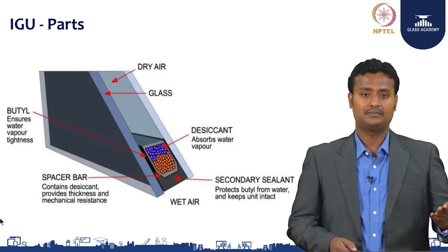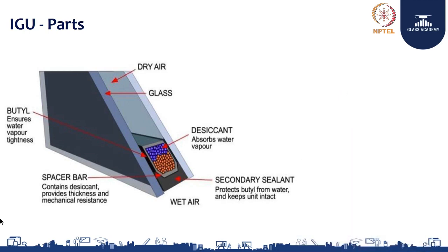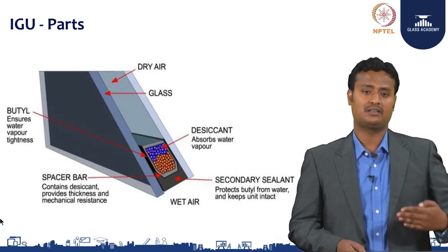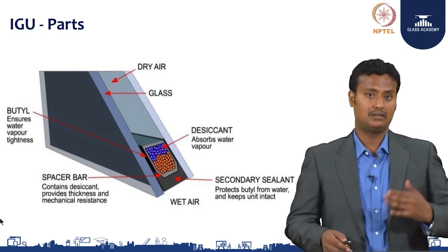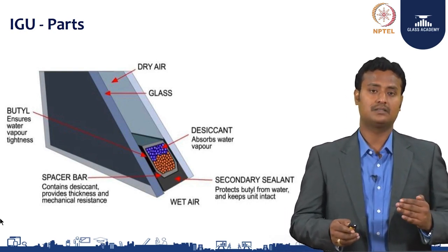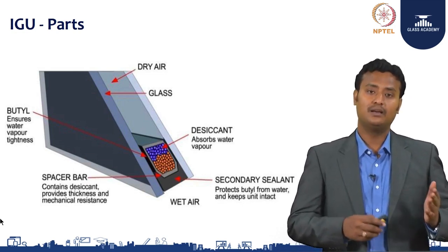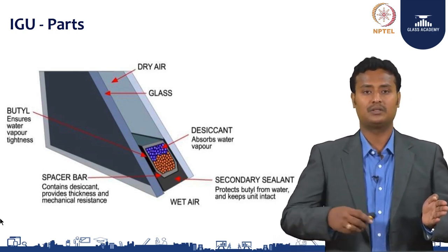Next is the butyl, which ensures water vapor tightness — it will not allow any water to seep inside the IG unit, or if any moisture was present at the time of glazing. It will not allow moisture to penetrate into the secondary sealant, which would otherwise cause loss of insulation. It also provides structural strength, helping with deflection under high wind load — the glass may tend to deflect during those periods.